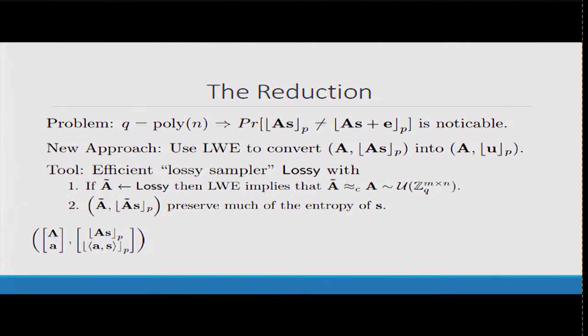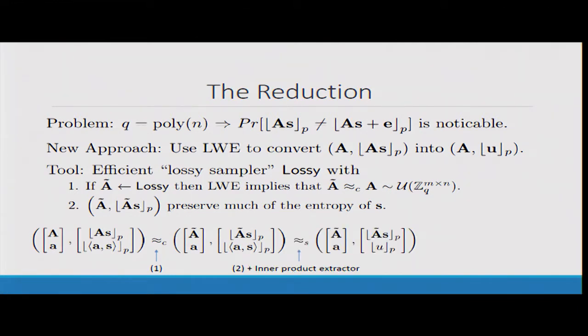Now I'm gonna show you that given such an algorithm, we can show that learning with errors already implies that learning with rounding is hard. Our goal is to show that this distribution is computationally indistinguishable from this distribution. The first thing I'm gonna do is separate out the bottom line. Then we use the first property of our lossy sampler to replace the matrix A with a matrix A tilde sampled by the lossy sampling algorithm.